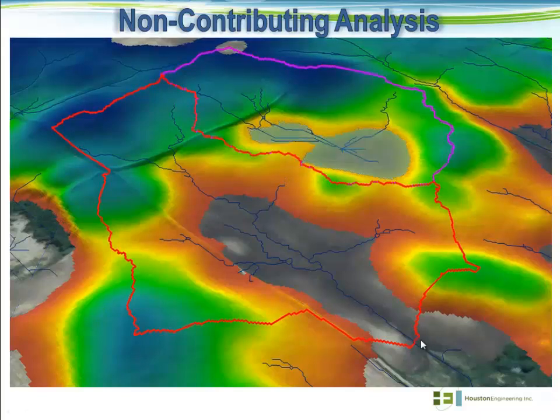The processing we've been doing to evaluate non-contributing areas uses the drainage area to that pothole to analyze the runoff produced for a given rainfall event. Once we know that, we can derive the storage below the spill elevation for that given pothole and compare that runoff volume to the available storage volume. If runoff is greater than available storage, that area would be contributing. However, in this case, runoff was less than the available storage, so there would be sufficient storage to contain all the runoff produced, making that area non-contributing to points downstream.